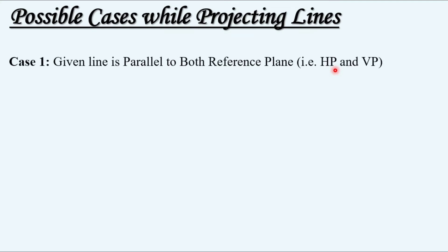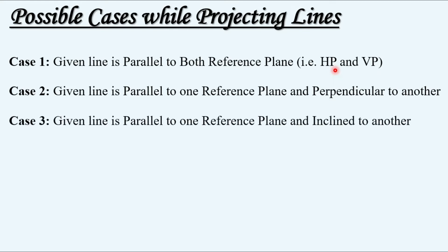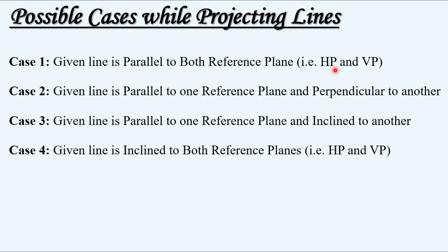Now the possible cases in projection of lines: Case 1 — the given line is parallel to both reference planes, that is HP and VP. Case 2 — the given line is parallel to one reference plane and perpendicular to another. Case 3 — the given line is parallel to one reference plane and inclined to another. Case 4 — the given line is inclined to both reference planes.